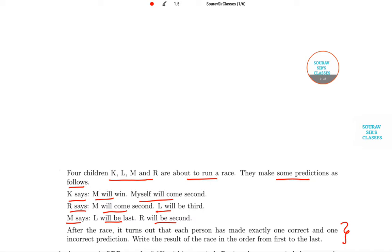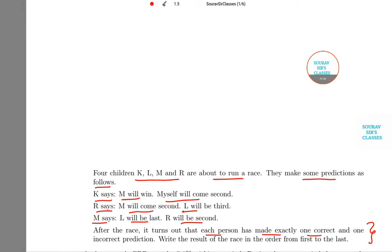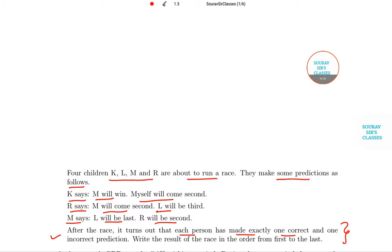After the race, it turns out that each person has made exactly one correct and one incorrect prediction. Write the result of the race in order from first to last. Now, if at all we start with this: if K comes second, then L was third.